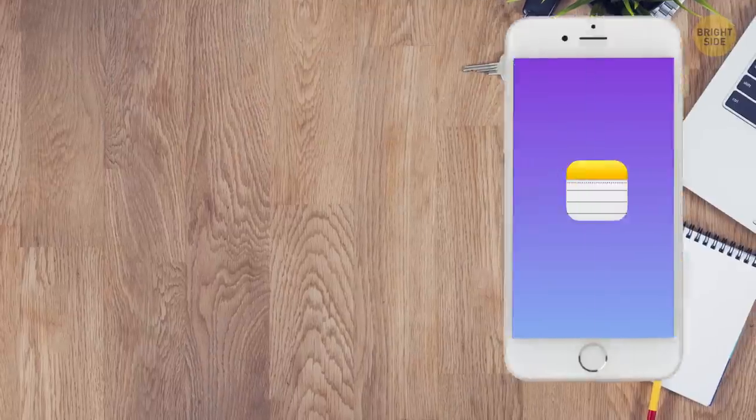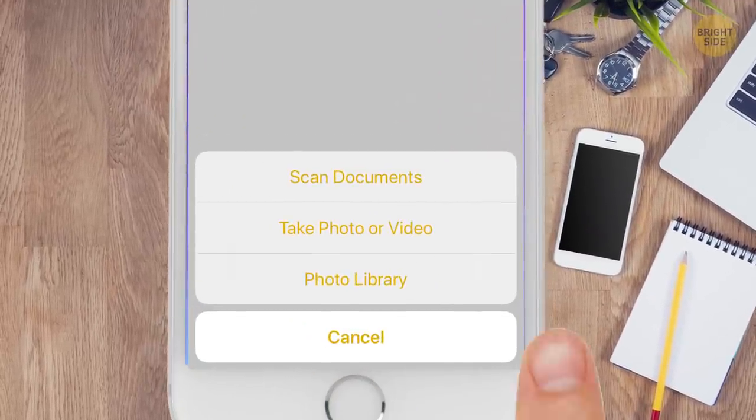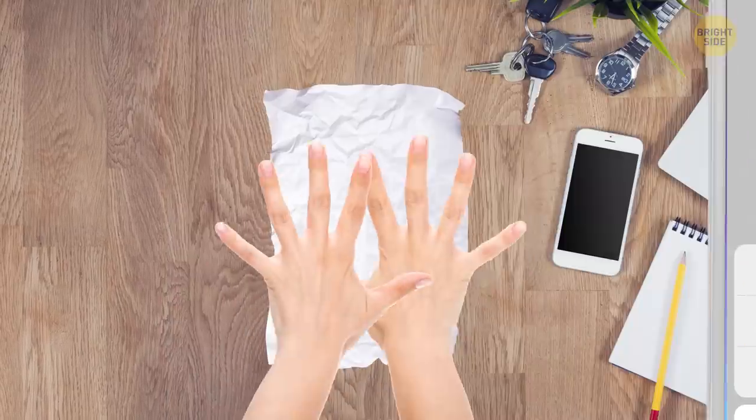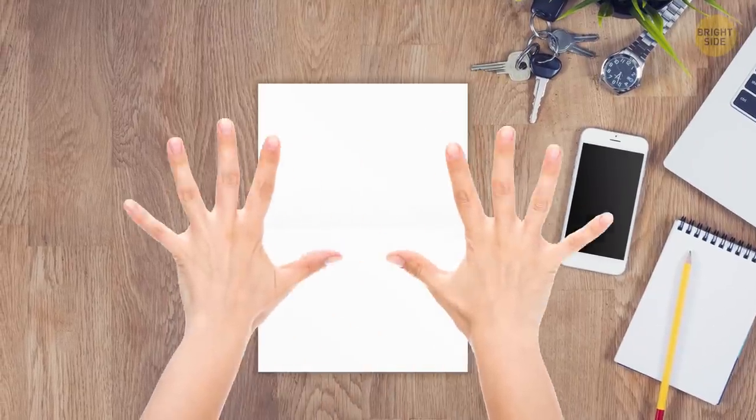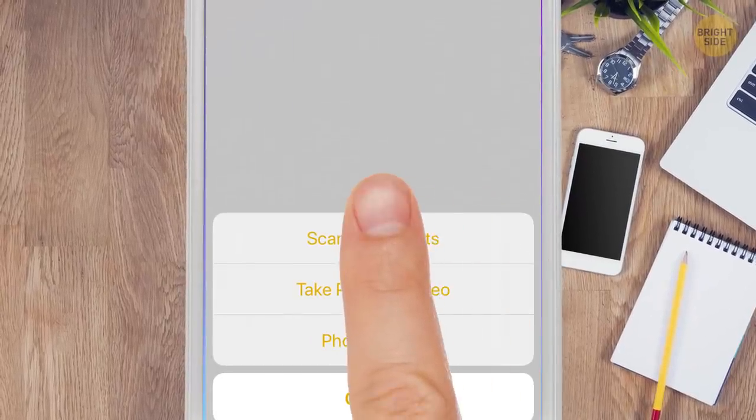You can use your iPhone as a mini-scanner. Create a note, tap the camera button, and choose Scan Documents. Line up the paper and tap the shutter. Do it as many times as needed to save several pages in one file.